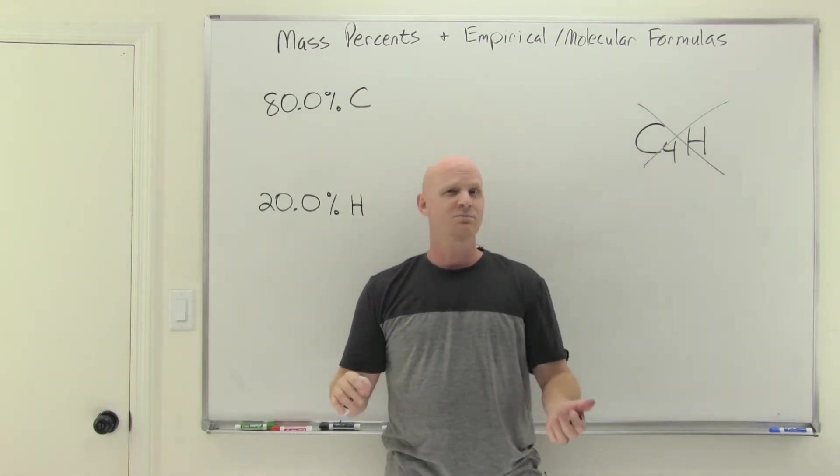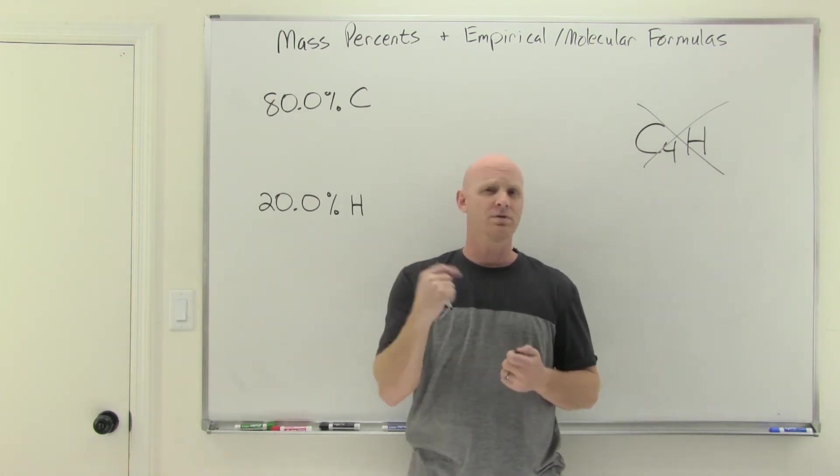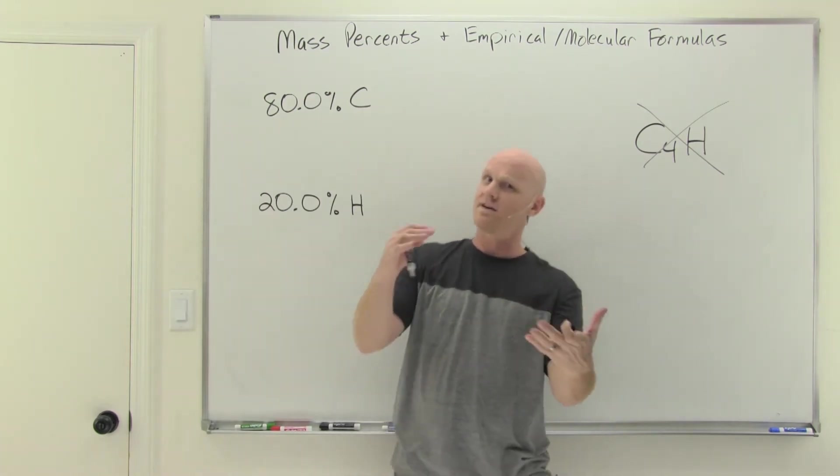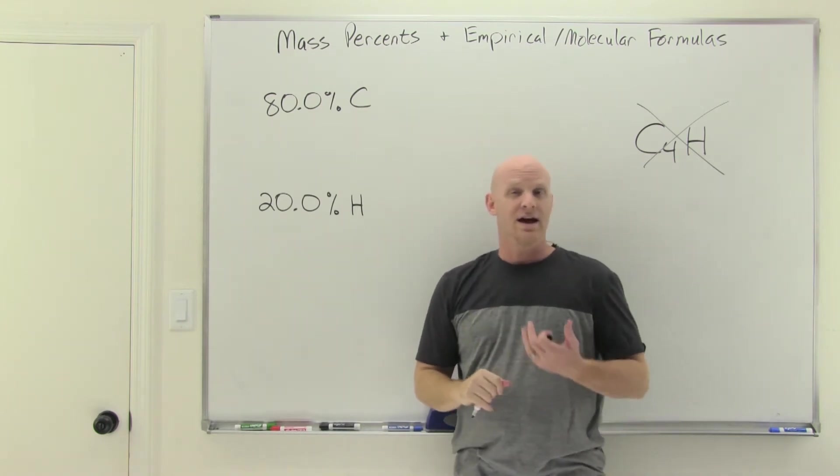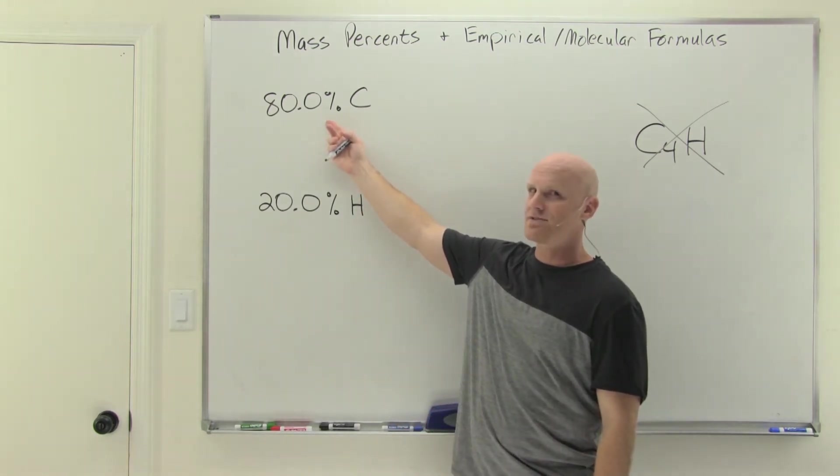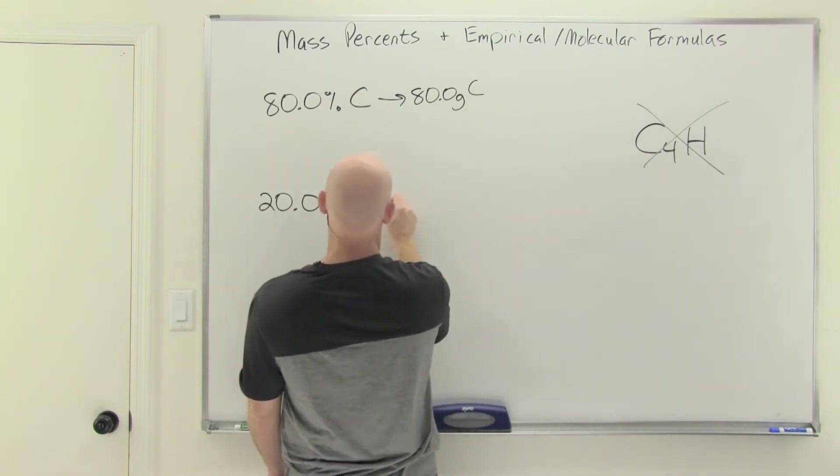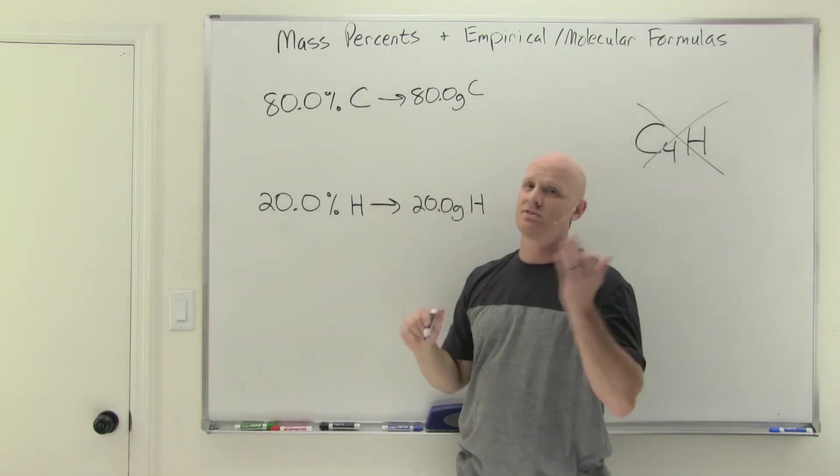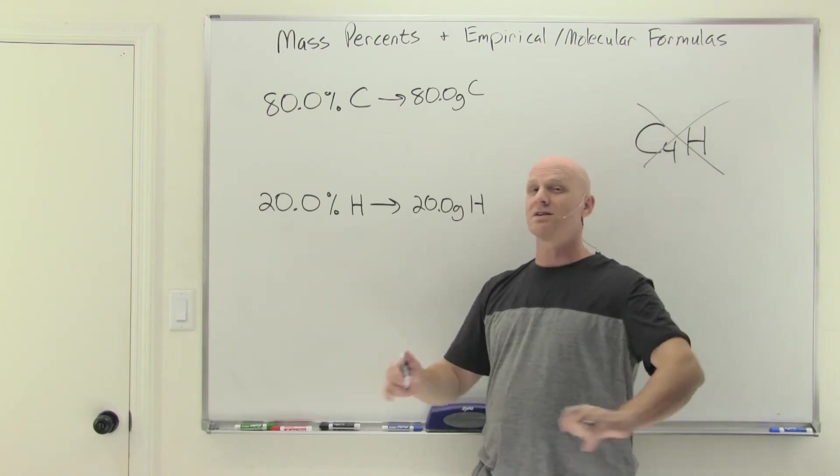Mass percents are an intensive property. Doesn't matter what sample size you start with. You can start with any for approaching this calculation. In this case, you can't choose one mole though, because to choose one mole you'd have to know its formula to be able to know its molar mass. But that's kind of the point in question - we want to find the formula. So in this case, the convenient sample size is 100 grams. You could use any sample size you want. The reason I'm choosing 100 grams is because it just makes the math easy. For a 100-gram sample size, if 80% of those grams are carbon, that's going to correspond to 80.0 grams of carbon. And if 20% of those grams are hydrogen, 20% of 100 grams would be 20.0 grams of hydrogen.